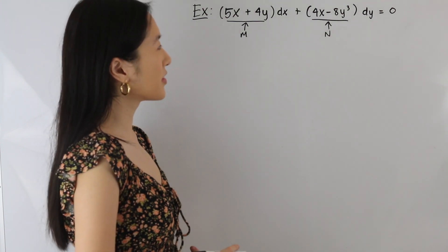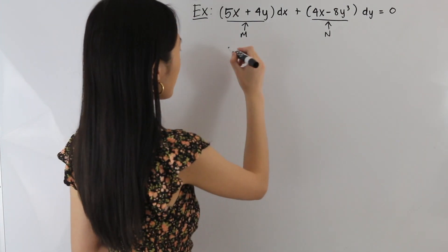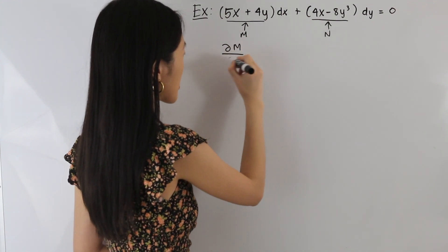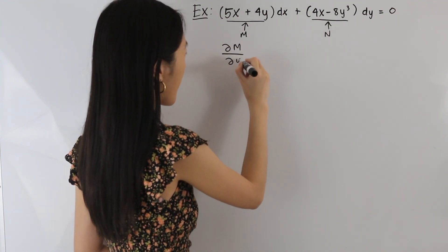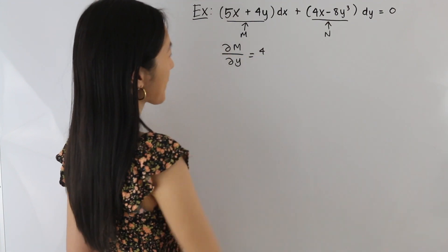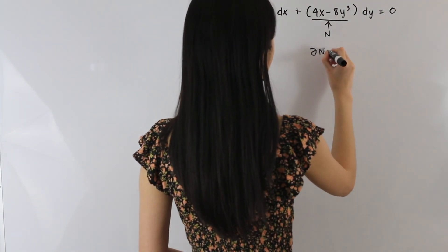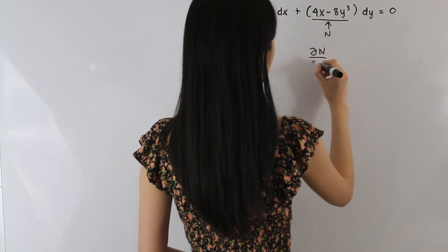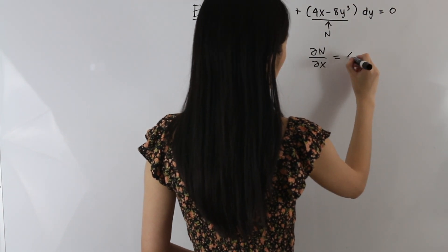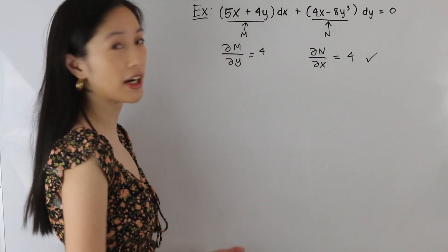Now let's determine whether or not our differential equation is exact by taking our partial derivatives. The partial derivative of M with respect to y gives us 4. The partial derivative of N with respect to x also gives us 4. So we know that we have an exact differential equation.